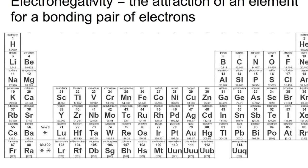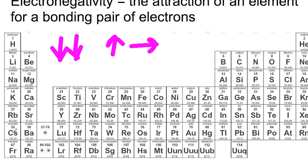Electronegativity is the attraction of an element for a bonding pair of electrons. Group 8 elements do not have electronegativity because they don't form bonds. Electronegativity decreases as you go down a group due to shielding of the outer electrons, and increases as you go across the period. Caesium has the lowest electronegativity and fluorine has the highest. It increases across the period due to increasing nuclear charge, which is not shielded by electrons as you go from left to right.